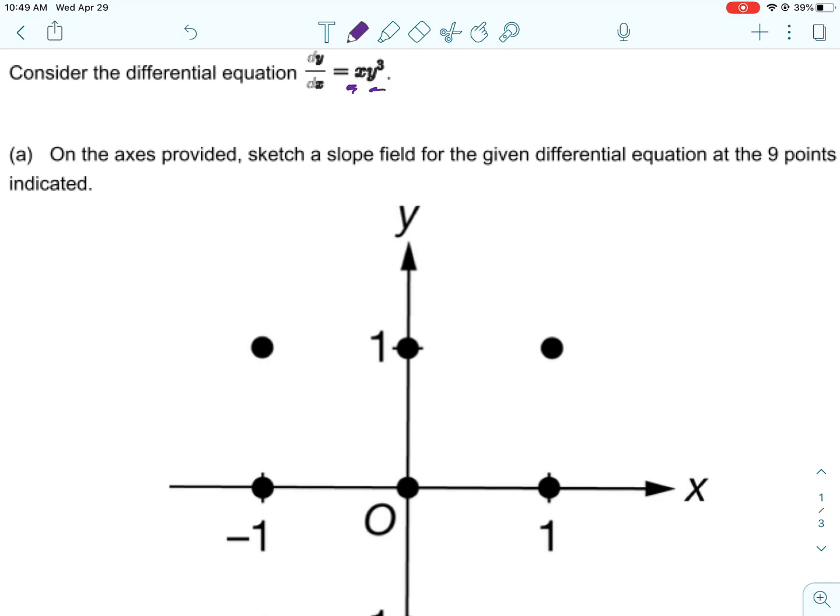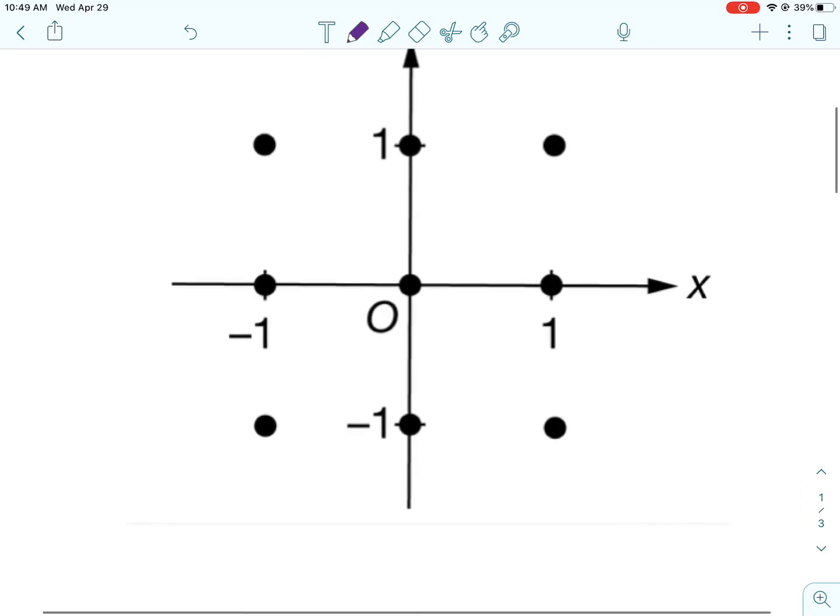We are asked to draw the slope field for the nine points indicated. So I have nine dots. For each one of these ordered pairs, I'm going to plug in the x coordinate for x and the y coordinate for y, and then just draw a little line that represents that slope.